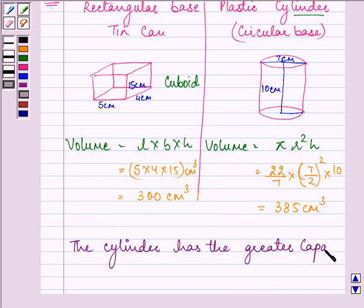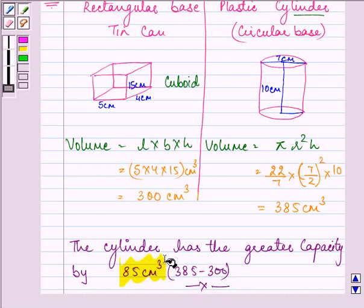Capacity means volume, by 385 minus 300, that is 85 centimeter cube, right? So this completes the session. Hope you enjoyed and understood the concept well. Have a nice day.